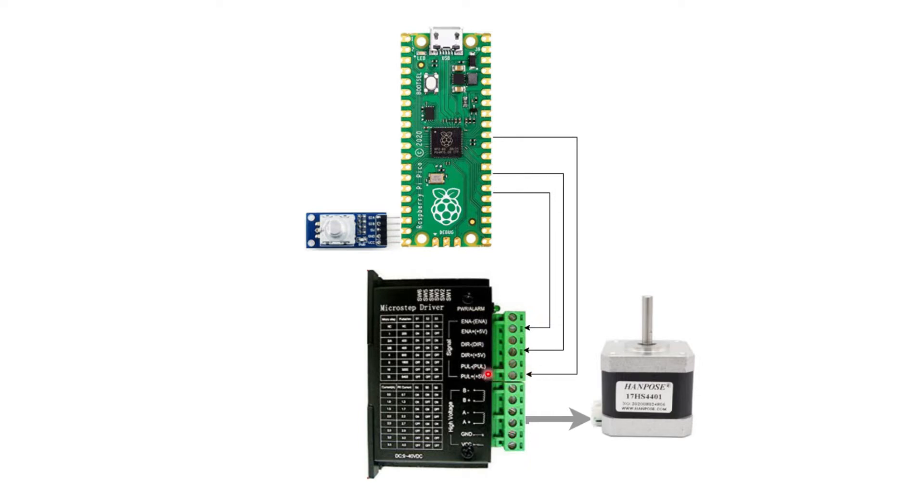So the three lines that are going to control that: one line to enable or disable the motor, one line to set the direction of the motor, and then the final one's this pulse line. And depending on the frequency of that pulse will be how fast the motor runs. And the microstep driver is doing a lot of the smart things underneath the hood to actually synchronize and sync up the coils on the motor so that it moves in the right speed in the right direction, does all those things.